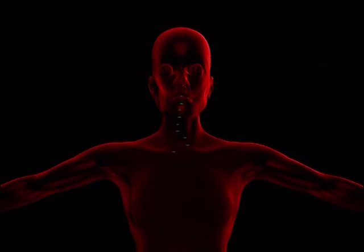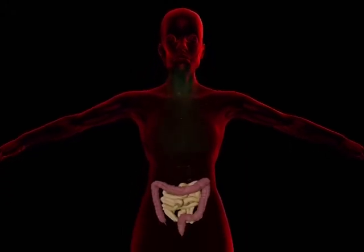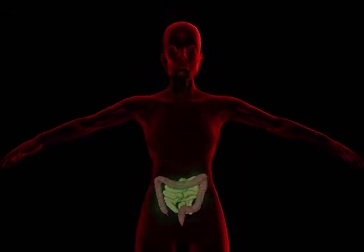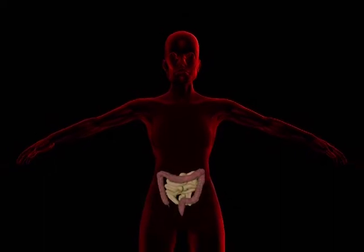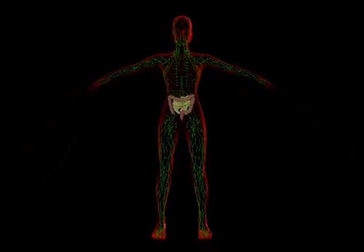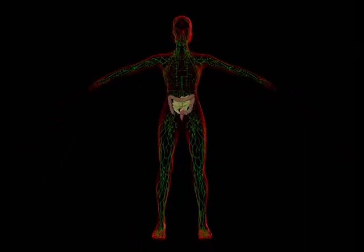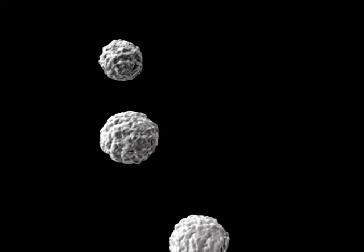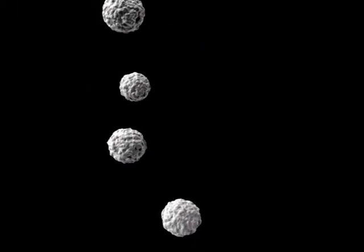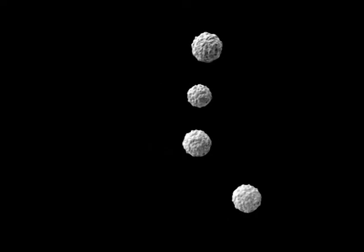Poliovirus enters the body through the mouth, infecting the first cells it comes into contact with in the throat and intestine. It eventually penetrates the intestinal lining and is absorbed into the blood and lymphatic system. Once the virus enters the bloodstream, it becomes a viremia and is widely distributed throughout the body.